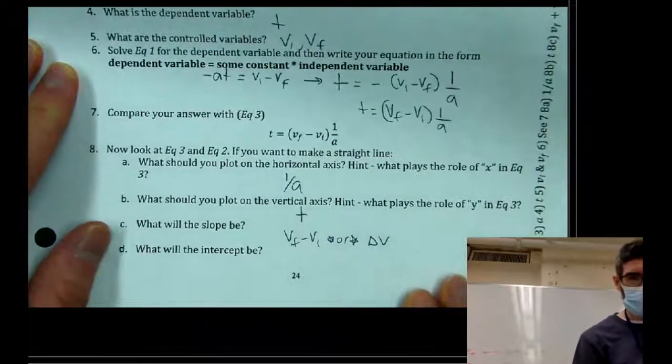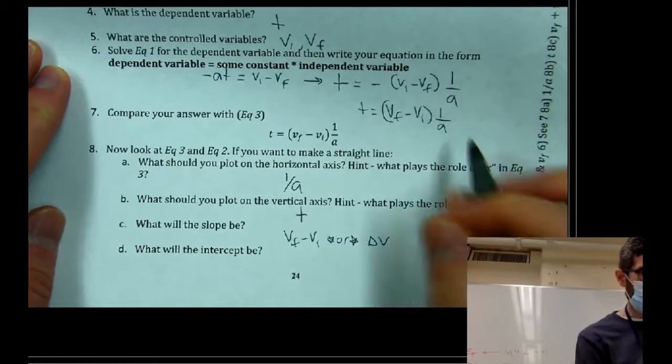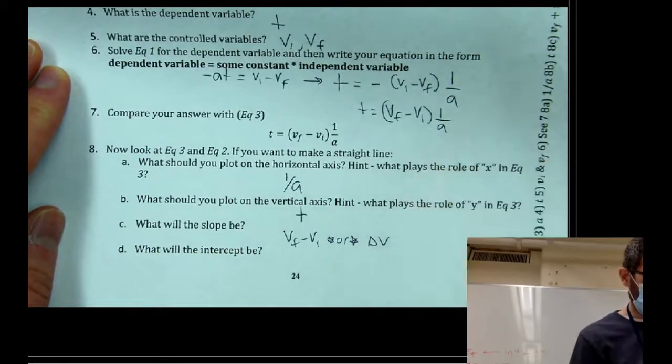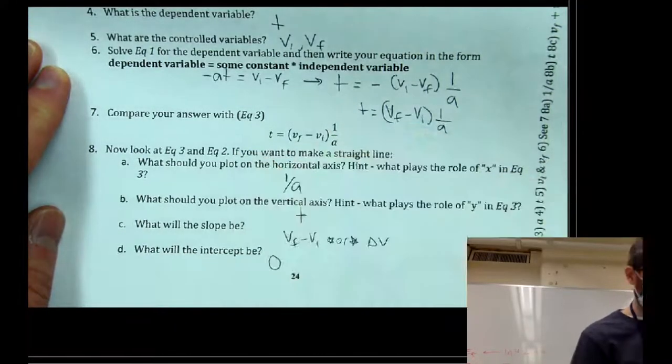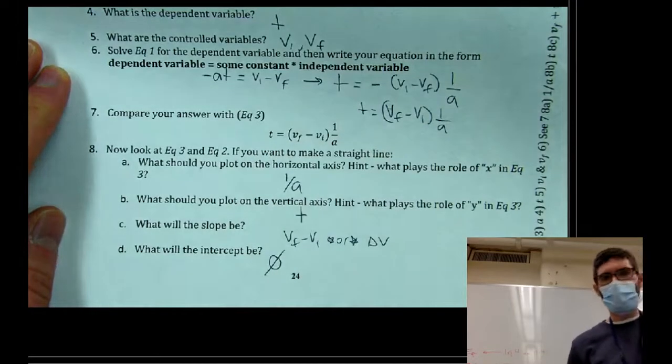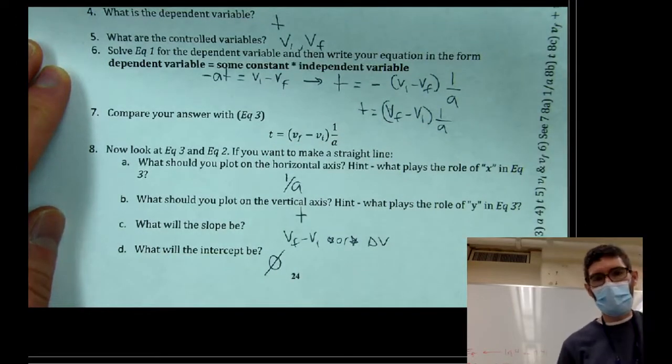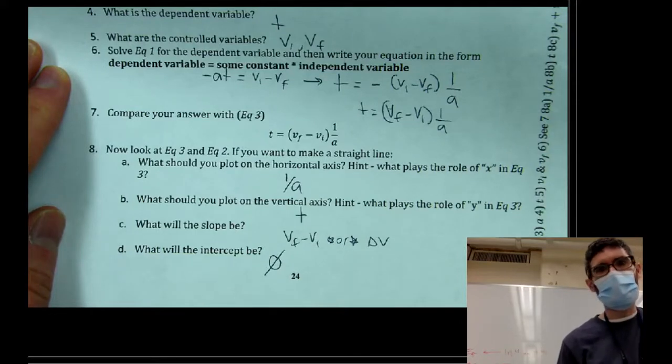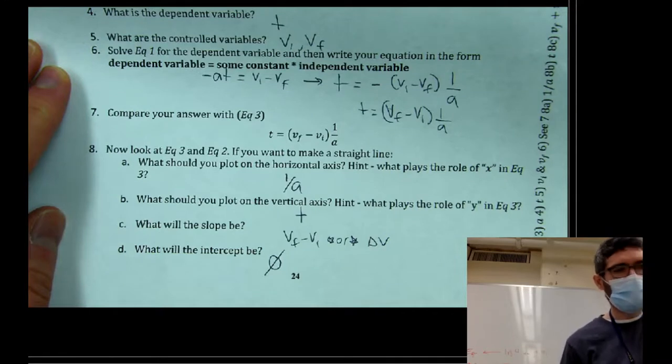So we're going to plot some version of our independent variable on the horizontal axis. It doesn't have to be exactly acceleration. It could be some manipulated version of acceleration that is factored out from all the constant multipliers. Now on the vertical axis, we could just plot time because that's already by itself. Our slope should be this multiplier term. So it could be VF minus VI or you could call it delta V. And then the intercept, I don't think there is any intercept there because there's no added term. So you should expect a zero intercept. And this is a good way to do some error analysis. If you expect a zero intercept, but you see a non-zero intercept, that's always a hint that there could be something else going on that you didn't expect. Either a flaw in your model, some kind of systematic error, it's a good thing to look out for.